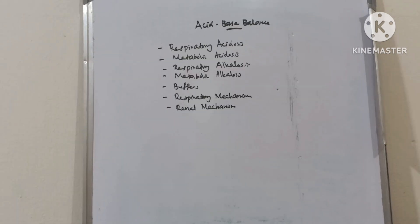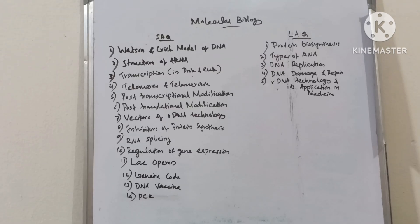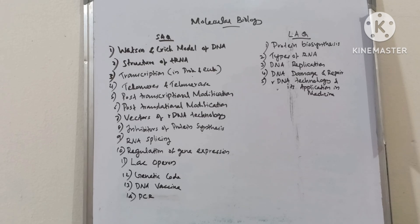Acid-base balance: respiratory acidosis, metabolic acidosis, respiratory alkalosis, metabolic alkalosis, buffers, respiratory mechanism and renal mechanism. Molecular biology short answer questions: Watson and Crick model of DNA, structure of tRNA, transcription in prokaryotes and eukaryotes, telomeres and telomerase, post-transcriptional and post-translational modifications, vectors of recombinant DNA technology, inhibitors of protein synthesis, RNA splicing, regulation of gene expression, lac operon, genetic code, DNA vaccine and PCR. Long answer questions: protein biosynthesis, RNA types, DNA replication, DNA damage and repair, recombinant DNA technology and its application in medicine.